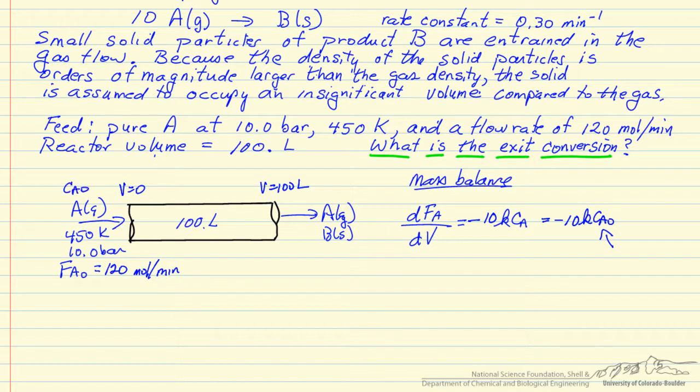That's the concentration at the inlet, and that means we can integrate this. We integrate from our inlet value to our outlet value, and this is what we want to determine because if we know the outlet molar flow rate, we can determine conversion. And we integrate from the inlet to 100 liters.